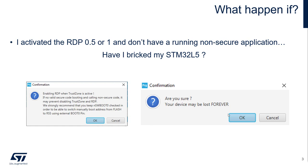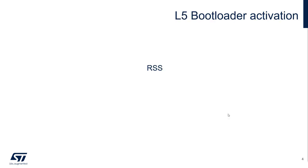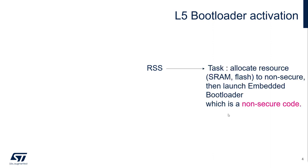So that's why I'm doing this video. Let's see how we can activate the RSS and what the RSS is. RSS is some code that is inside the system flash. It's a task that will allocate flash and SRAM resources to non-secure and then launch the embedded bootloader, which is a non-secure code. That means when the embedded bootloader is running, the core is in non-secure state — meaning we can connect.